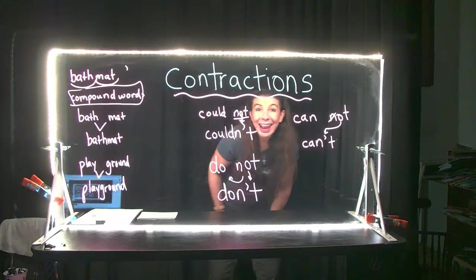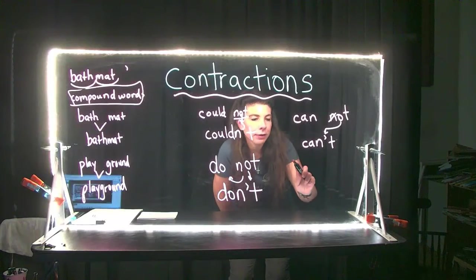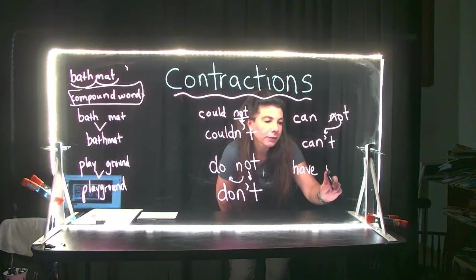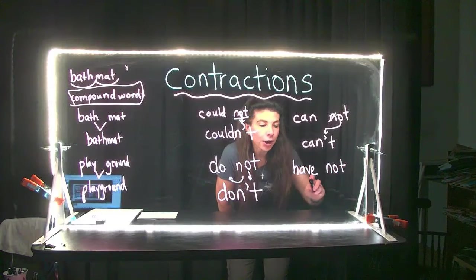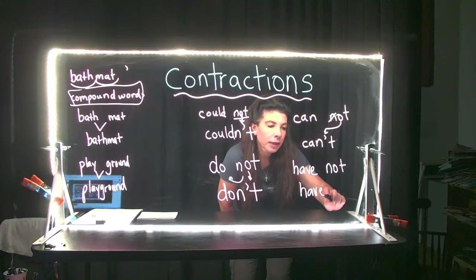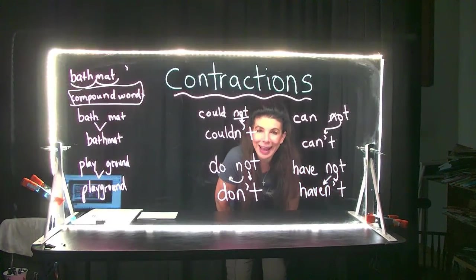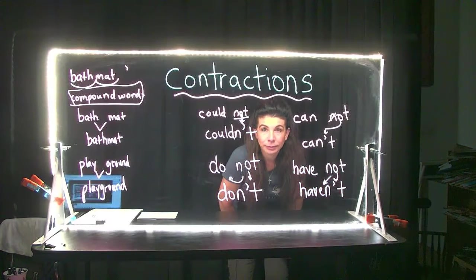'I haven't any more candy left' — that's 'I have not any more candy left.' Have not. If I make that a contraction: keep 'have,' the N goes with 'have,' the O becomes the apostrophe, and then the T is at the end. Haven't. Let that sink in.